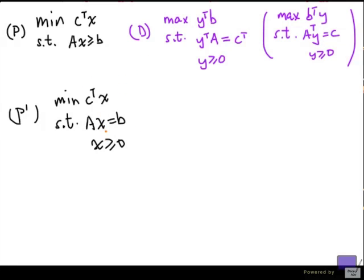In essence, what we are trying to do is come up with something that gives me a lower bound on c transpose x. We want to lower bound the optimal value for P prime.